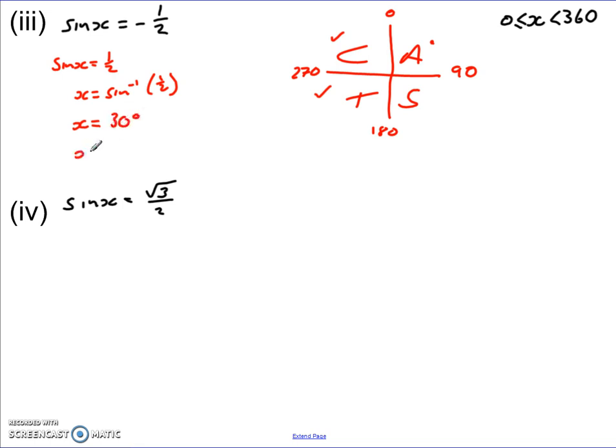So I then use that and say, right, so I know that x equals 180 plus the 30 degrees, and also equals 360 minus the 30 degrees, to get my second solution. So from that, I know that x is equal to 210 degrees and 330 degrees.